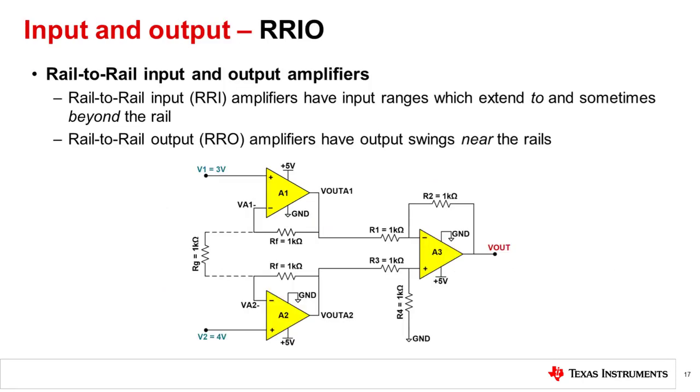To refresh on a previous TIPL video, let us review rail-to-rail input and output operation for op-amps. When an op-amp is said to be rail-to-rail in, this means the common mode input voltage range is up to or beyond the power supply rails. In our 5-volt single supply example, that means our input voltage range is 0 to 5 volts.